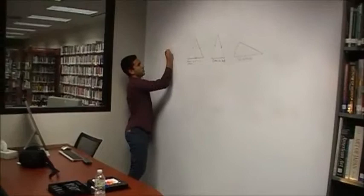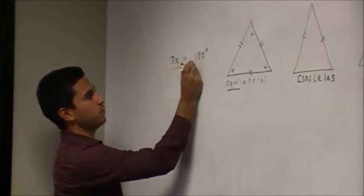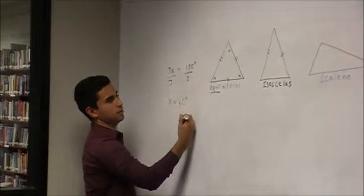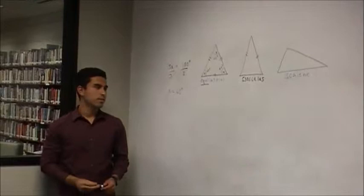So if we have three x, x being the respective angles, equals to 180 degrees, which is the total degrees of a triangle, we would just divide both sides by three, and our x value would be 60 degrees. So each angle of an equilateral triangle is 60 degrees.